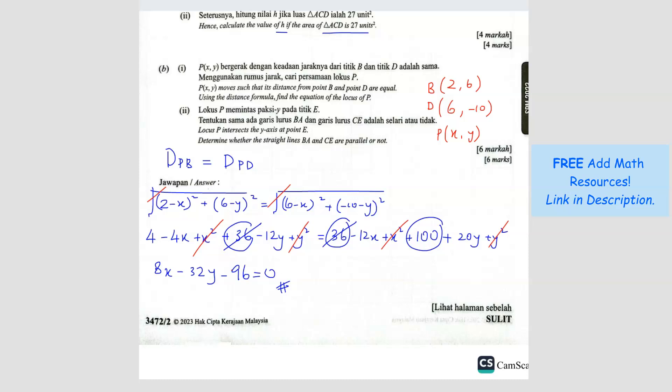Question B2. They're asking to determine, locus P intersects y-axis at point E. So determine whether BA and CE is parallel or not. So point E is on the y-intercept, so the coordinate will be X equals 0, and then we want to find the Y. So we want to find the Y, we just have to substitute 0 into the locus P because it lies on locus P. So it's going to be 8 times 0, so this is no more. So 32Y equals negative 96. So Y equals negative 96 divided by 32. So you get negative 3. That means the coordinate of E is 0, negative 3.